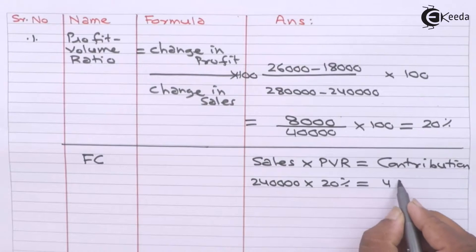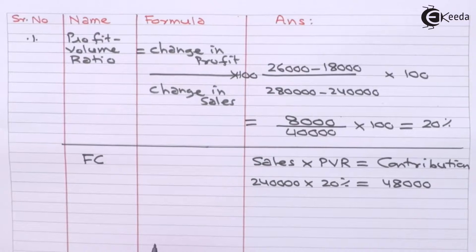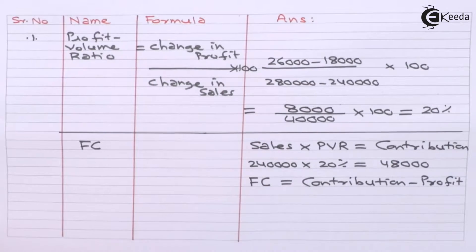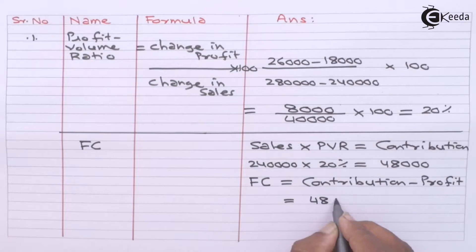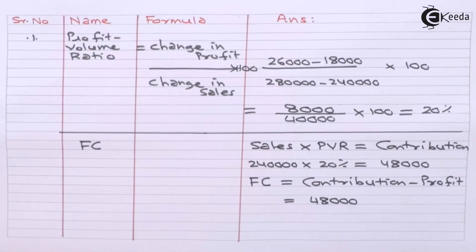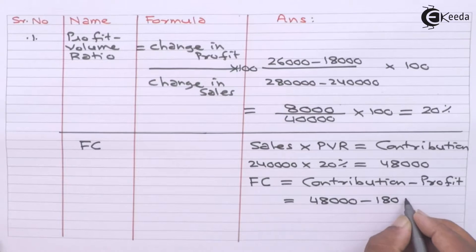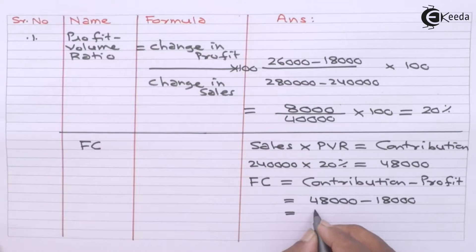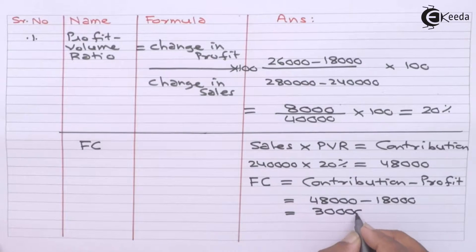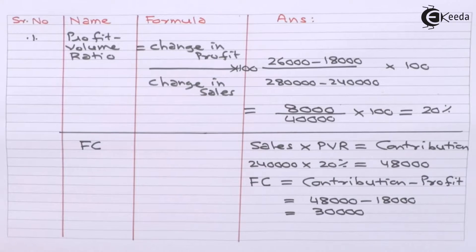The contribution for Year 1 comes to ₹48,000. Now, fixed cost equals contribution minus profit. Contribution is ₹48,000 and Year 1 profit is ₹18,000. So ₹48,000 minus ₹18,000 gives fixed cost of ₹30,000. This is how we calculated the fixed cost using the PV ratio.